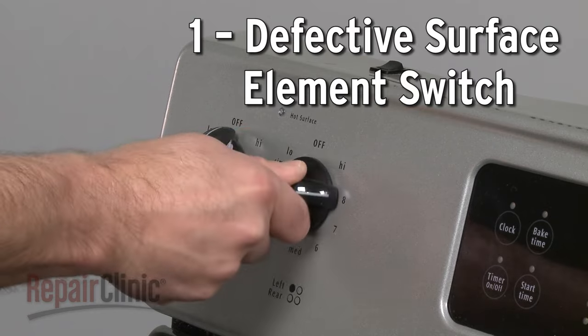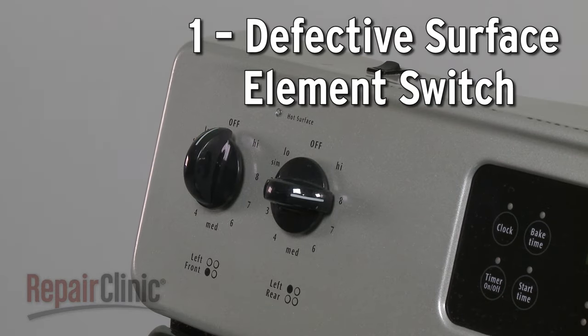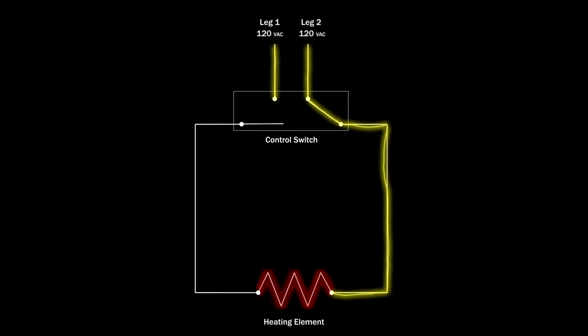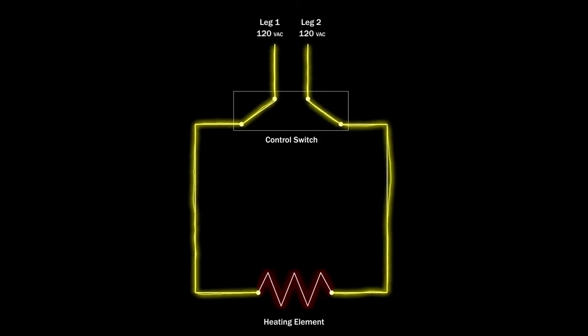Each surface element is controlled by its own switch. When the element reaches the designated temperature, the switch shuts off the voltage. This cycle repeats throughout the cooking process to maintain the proper temperature.